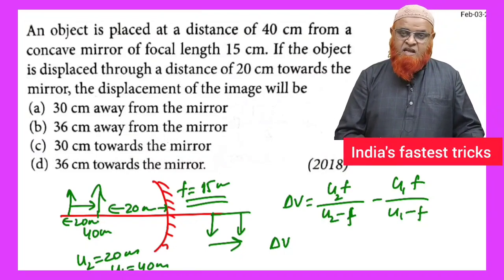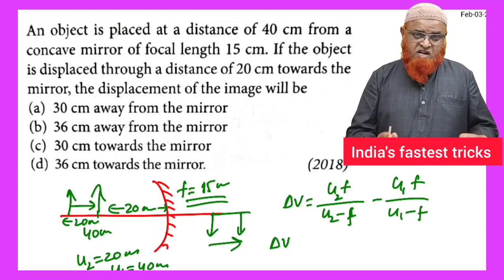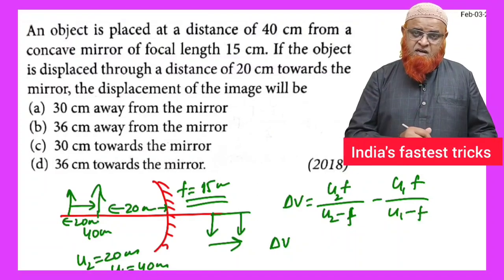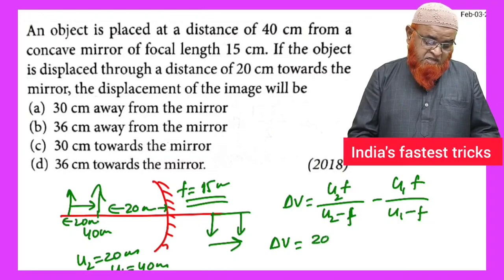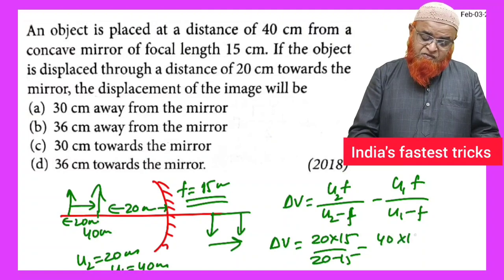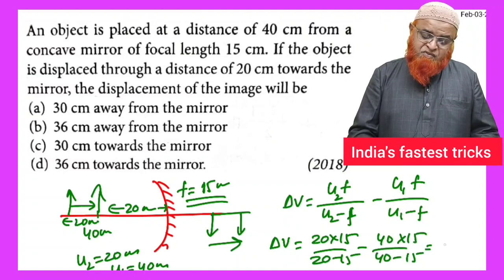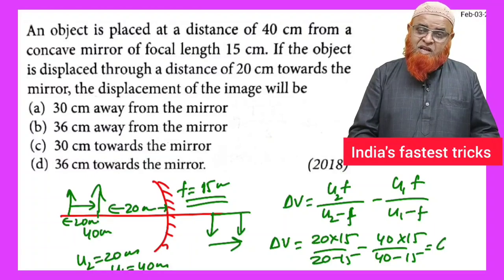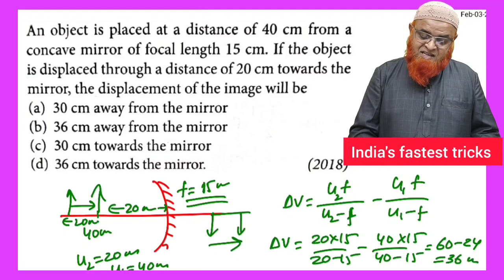So u2 is 20 into 15 by 20 minus 15, minus 40 into 15 by 40 minus 15. So this is going to become 60 minus 24, your answer is 36 centimeters, that's it.